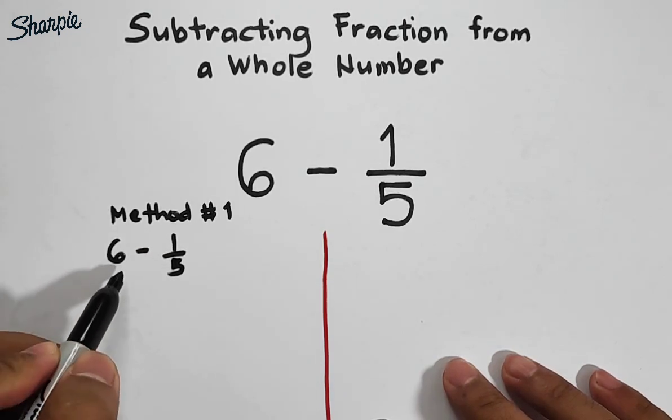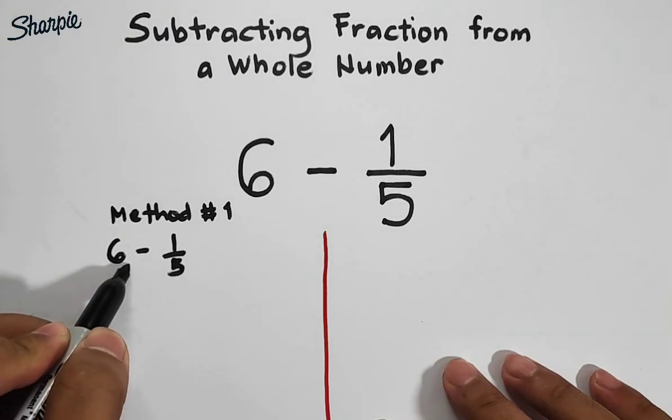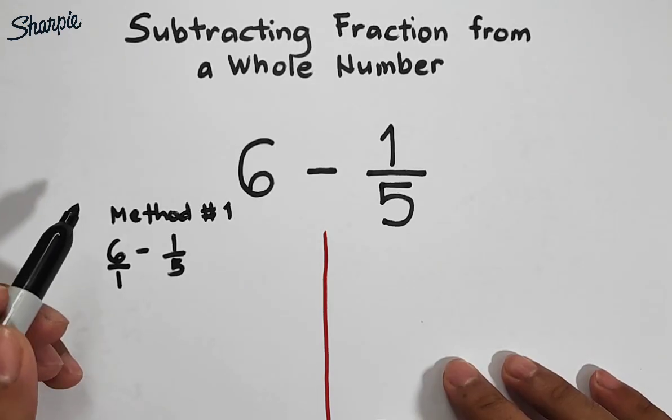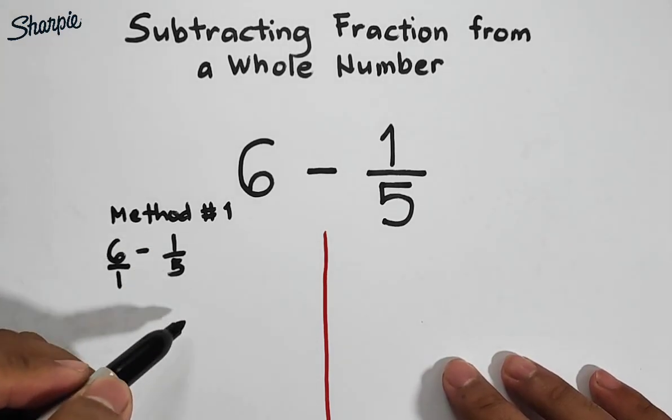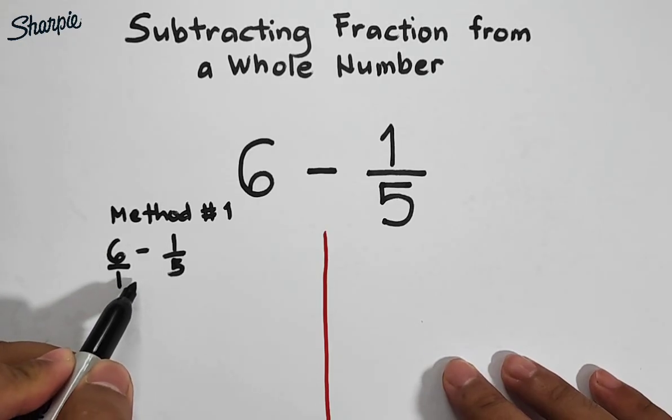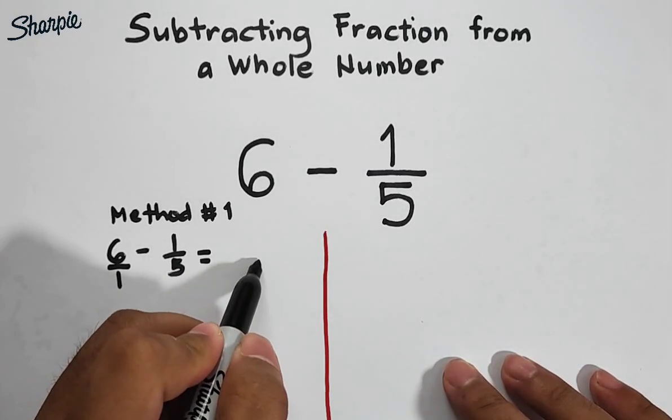This whole number has an invisible denominator, which is 1. So we can rewrite it as 6 over 1. As you can see, our new fractions are 6 over 1 minus 1 over 5. We need to get the LCD of these two denominators, which is equal to 5.